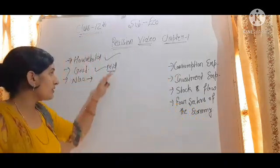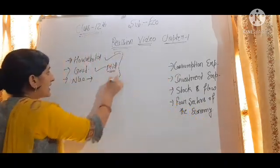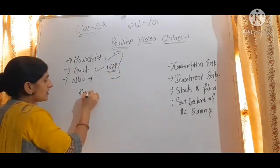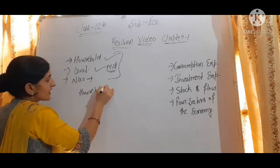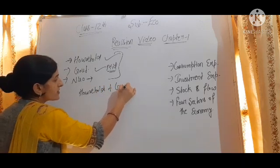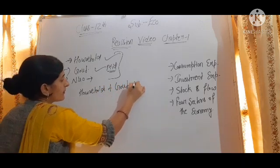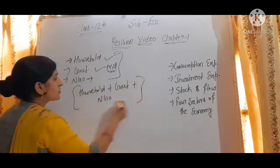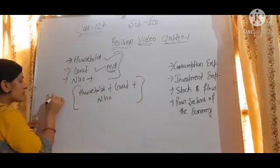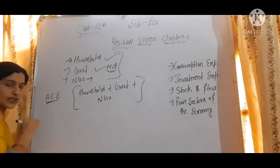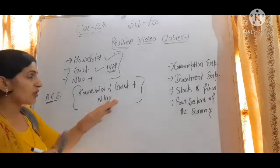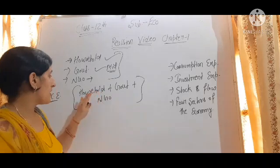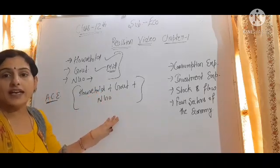So mainly we have three sectors. The aggregate of household sector, government, and NGO is called aggregate consumption expenditure. These are the components of consumption expenditure: household, government, and NGO.